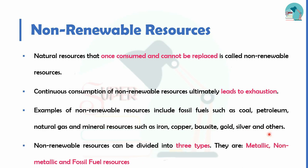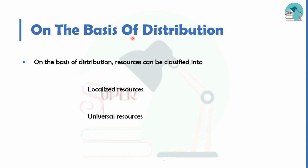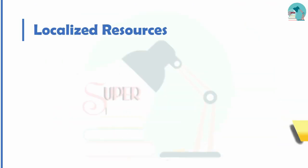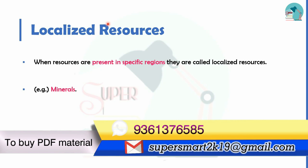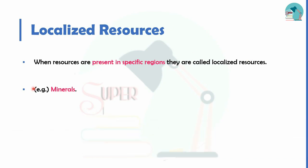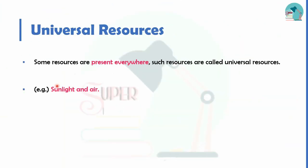Non-renewable resources are of three types: metallic, non-metallic, and fossil fuel resources. For more on mineral resources, you can refer to the video link below. Next, based on distribution, resources are classified as localized and universal resources. Localized resources are present only in specific regions, such as minerals found in one particular area. Universal resources are available everywhere, such as sunlight and air.